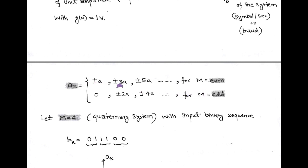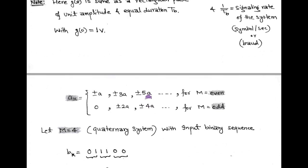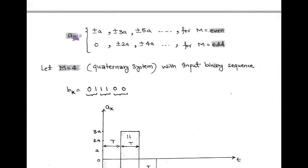When M is even, the input binary data Bk is encoded to Ak having distinct levels ±a, ±3a, ±5a, etc. While in the case of odd M, Ak takes values 0, ±2a, ±4a, etc. This is the level-encoded signal Ak corresponding to input binary data Bk, based on M-ary encoding for both even and odd values of M.